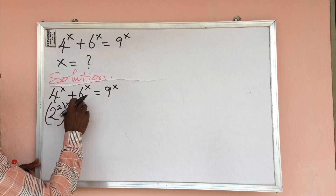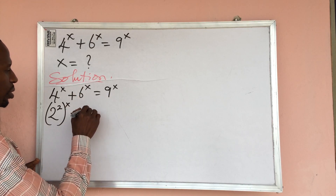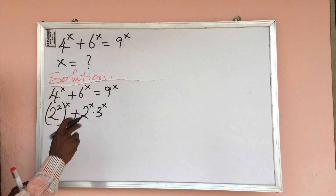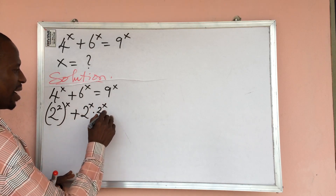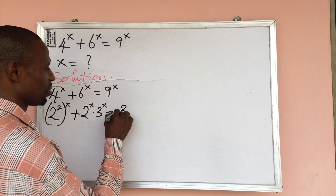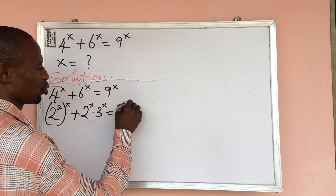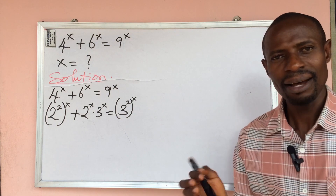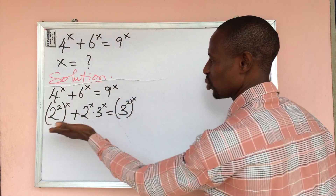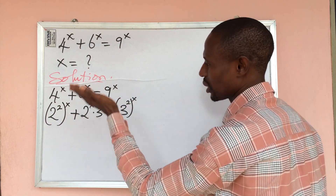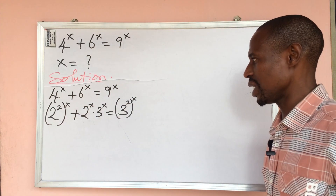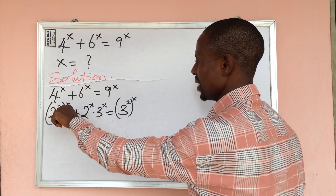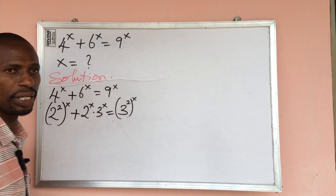6 to the power of x can be written as 2 to the power of x times 3 to the power of x. On the right-hand side, 9 equals 3 to the power of 2, so we have 3 to the power of 2, all to the power of x. Now that we have reduced these numbers to their prime form, we apply the indices law: a to the power of m, all to the power of n, equals a to the power of m times n.